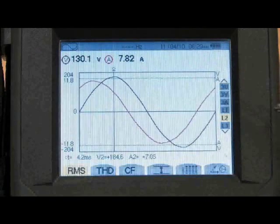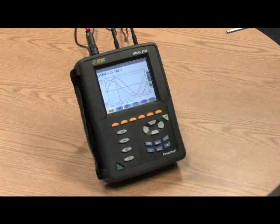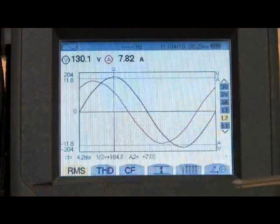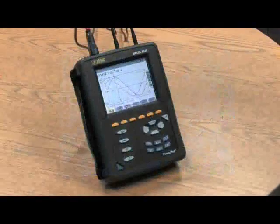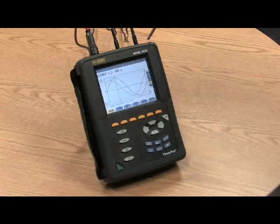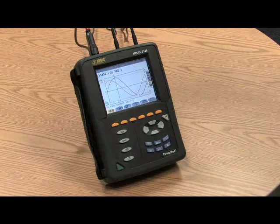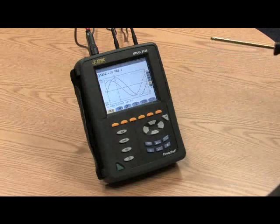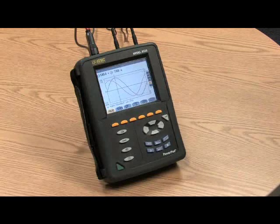The sampling mechanism for the model 8335 is such that we sample all eight inputs at 250 times per cycle. So we get a very good trace fidelity, very good reproduction of the signal.